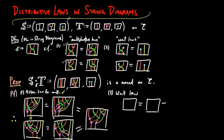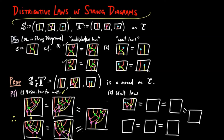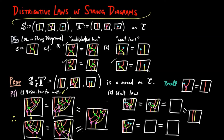For the unit law, we use the unit law for the monad T to obtain the following. Then we use the bottom unit law for the distributive law above, which gives us the top right diagram. Then by the unit law for the monad S, we have the equality on the right.